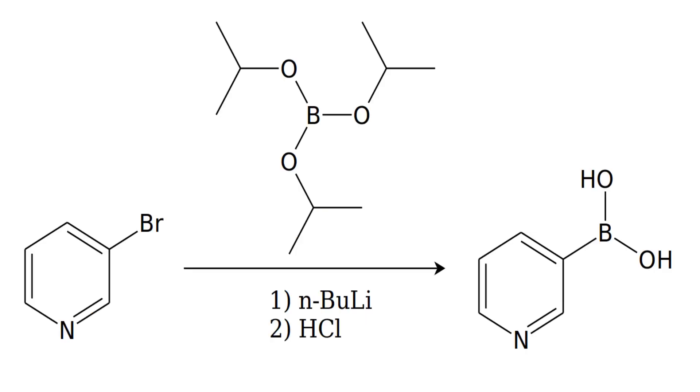After that, we substitute the bromine with a dihydroxyboryl group by applying triisopropyl borate together with n-butyllithium and hydrochloric acid.